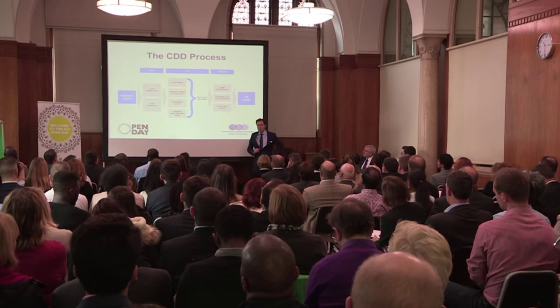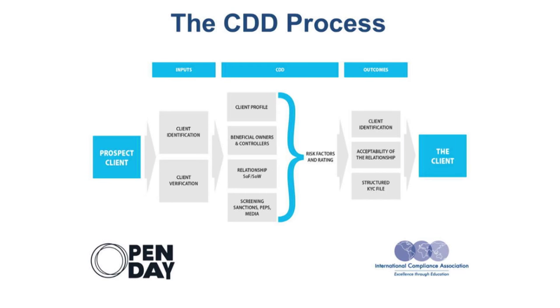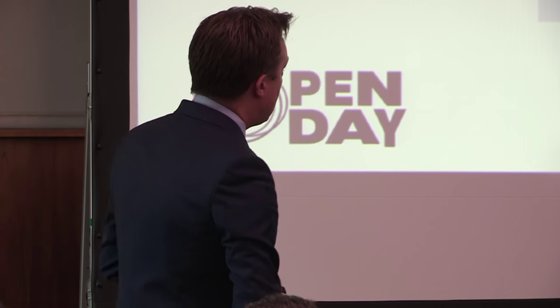The CDD process is covered from start to end, including the interrelationships with other aspects of AML. Source of funds and source of wealth are very interesting areas. We train a lot of casinos, both land-based and internet, including the big clubs in London's Mayfair. They get Abramovich-level customers who will spend five million pounds a night, and they have to ask the source of wealth question — they'll have the club manager buy the new customer a cocktail and ask how they made their money. Of course, they verify it independently. Screening, adverse media, and PEPs are all things we'll explore on the program as well.